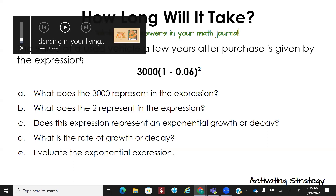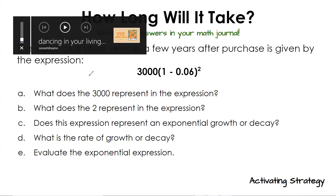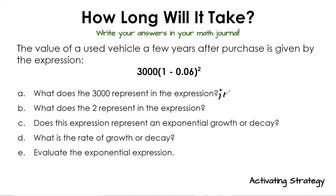Let's talk. We've got a vehicle after it's been purchased, given by this expression. What does the 3,000 represent in this expression? It's the down payment — the initial cost. So it represents the initial amount. What does the t represent? How many years — so two years.